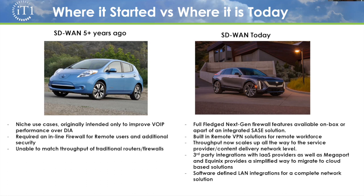There are also lots of third-party integrations now with infrastructure-as-a-service providers like Megaport or Equinix, which simplifies the trend of moving to cloud-based platforms like Azure, AWS, and GCP. And at least Cisco and Juniper have solutions that integrate with your local LAN, so you have a full single pane of glass for your LAN and WAN all in one bundle.